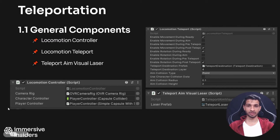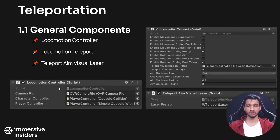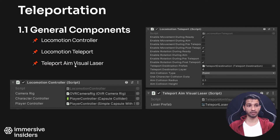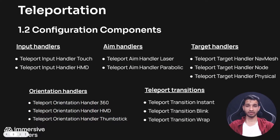Before implementing teleportation in Unity, you need to understand how it works with the Oculus Integration SDK. There are three required components. First is the Locomotion Controller, which coordinates the camera rig, character controller, and player controller. Second is Locomotion Teleport, a primary component that manages various teleportation types — including the teleport destination prefab that shows where you'll land. Third is the Teleport Aim Visual Laser, which renders the aiming ray.